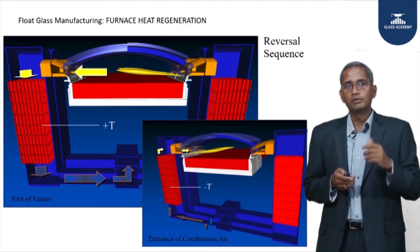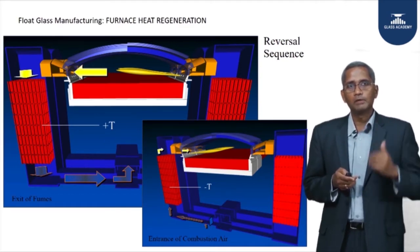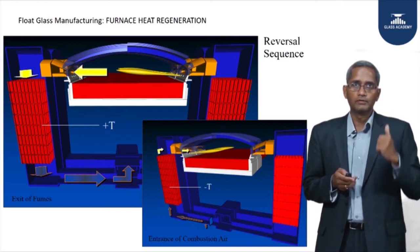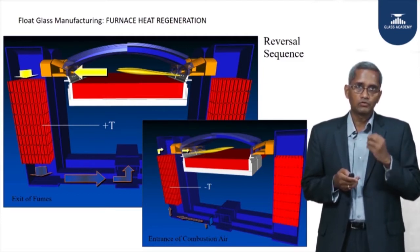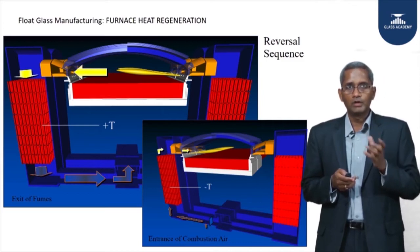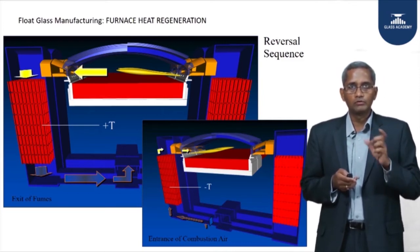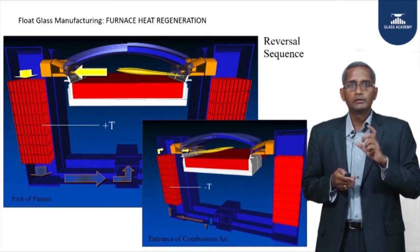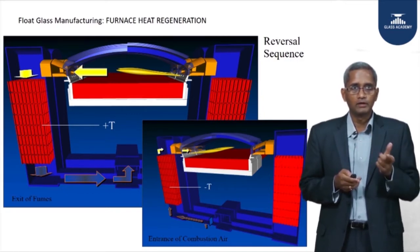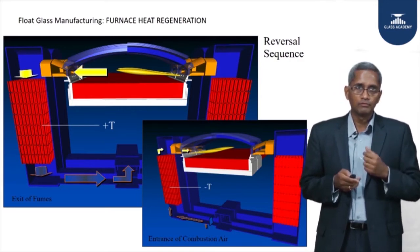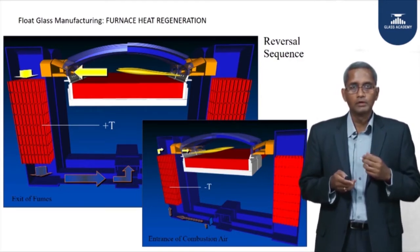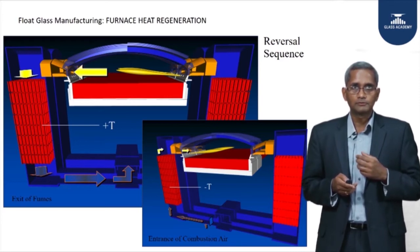This preheated combustion air reacts with fresh fuel to keep the furnace temperature at 1600°C. During this 20-minute period, with firing from the left hand side, the flue gas goes to the right hand side regenerator, which now starts to absorb heat. Every 20 minutes we swap — called a reversal — and the heat is recuperated back into the furnace. This type of furnace is called a regenerative furnace, which is quite normal among all glass manufacturers.